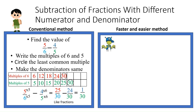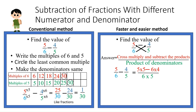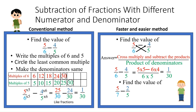Now we will do the faster and easier method. Find the value of 5/6 minus 4/5. As in addition of fractions with different numerator and denominator, you have to cross multiply. The answer is cross multiply and subtract the products, divided by the product of denominators. So you get 25 minus 24 upon 6 times 5, which equals 1/30. Try one yourself: 5/7 minus 2/5. The answer is 11/35.